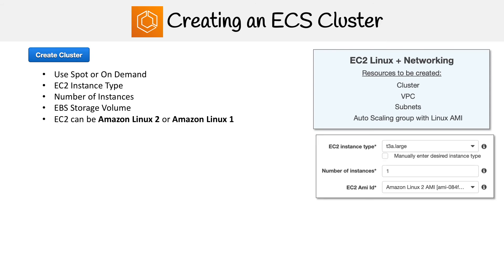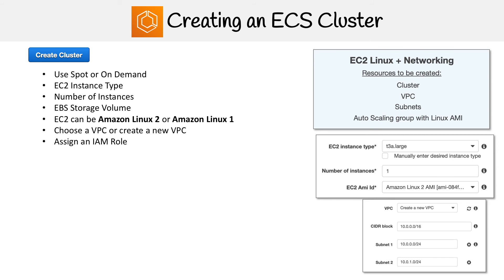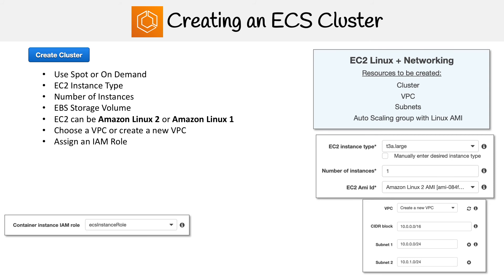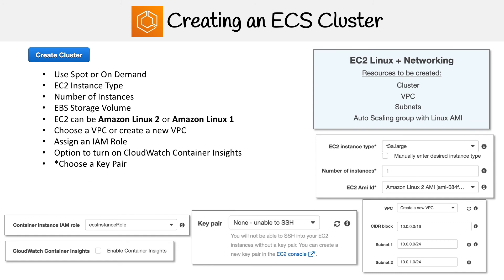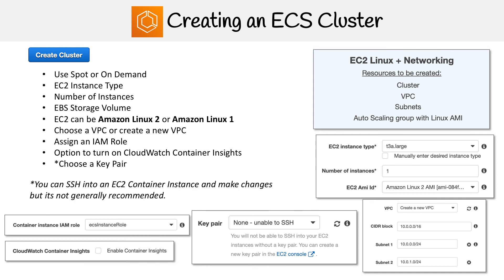There are some of those options right there. You'll also have to choose your VPC, or you can create a new VPC. Then you need to decide on an IAM role. You have the option to turn on CloudWatch container insights, which is going to give you richer metrics about the operations of your containers. And then you can choose a key pair, which is unusual because you don't necessarily need to log into your instances. AWS generally does not recommend you SSH into those containers, but you totally can.